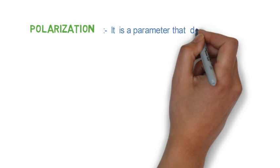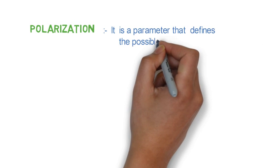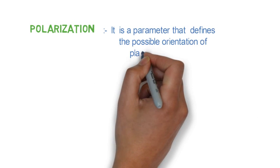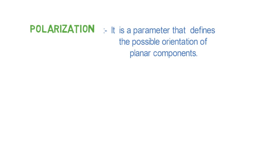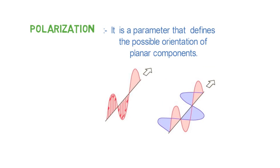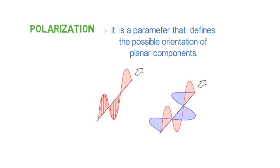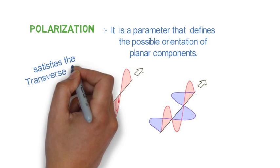Polarization is a parameter which defines the possible orientation of the components of wave. In electromagnetic wave, it indicates the possible orientation of electric field and magnetic field so as to satisfy the transverse nature of EM wave.